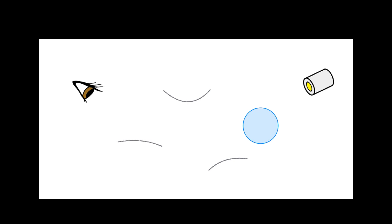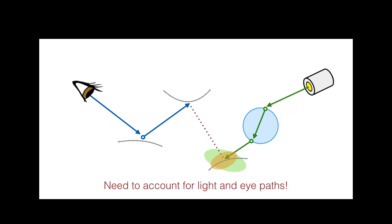We further extend our method to bidirectional light transport simulation. Here, when forming a bidirectional connection, the reflectance from the connecting endpoints must be pre-filtered according to the combination of the light subpath and the eye subpath footprints. Please refer to the paper for all the technical details.